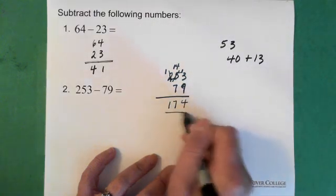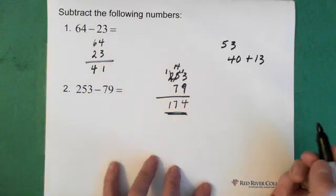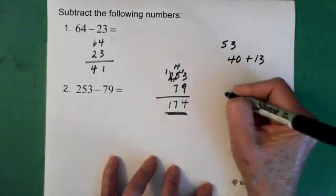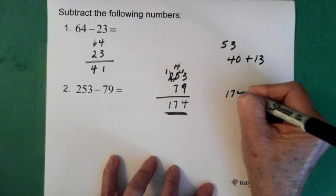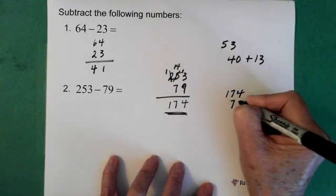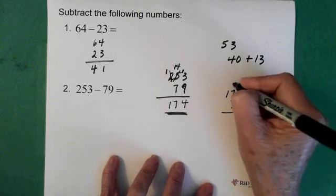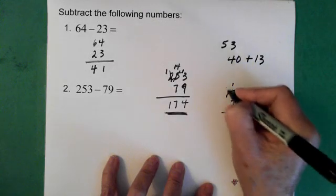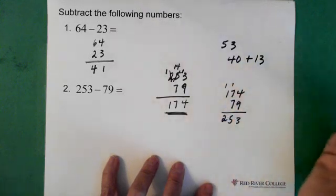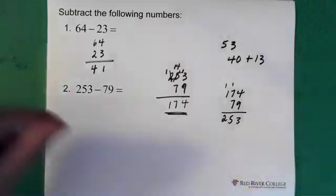So the answer to this question would be 174. And then again, if you're thinking I'm not sure, you take your 174, add it to the 79. That's a 3, carry the 1, 5, carry the 1, 2. So that's where we started, 253.